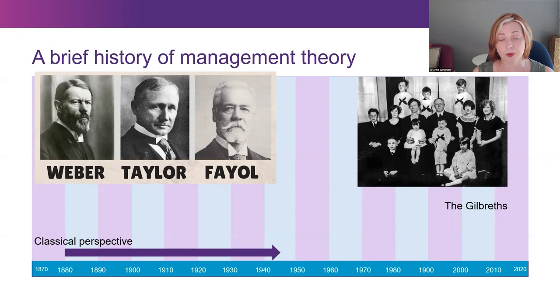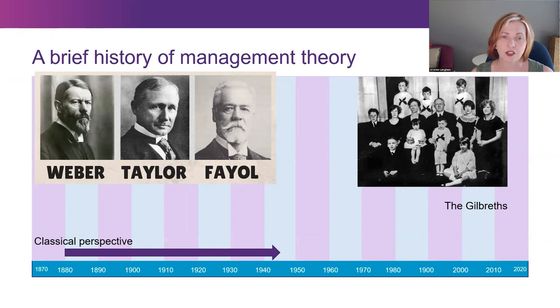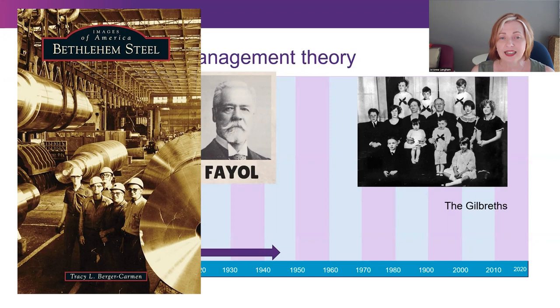Taylor suggested that decisions based on rules of thumb and tradition be replaced with precise procedures, which he believed could only be developed after a careful study of individual situations. Taylor's approach is illustrated by the unloading of iron from rail cars and the reloading of finished steel in the Bethlehem Steel Plant in 1898. Taylor calculated that with the correct movements, tools and sequencing, each man was capable of loading 47.5 tonnes per day, instead of the typical 12.5 tonnes.